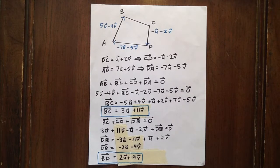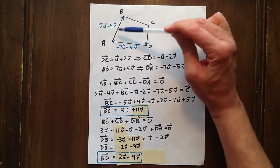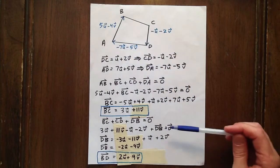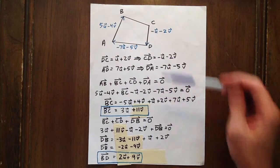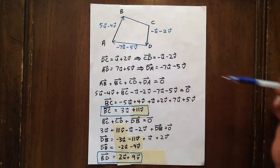Secondly, we want to know what BD equals. So we know that AB plus BD plus DA equals zero, or alternatively BC plus CD plus DB equals zero.